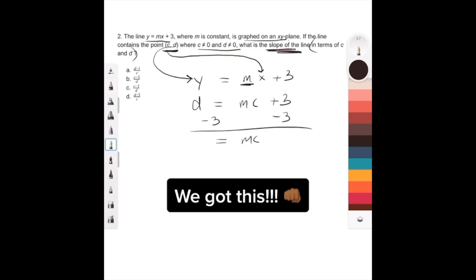Now you divide both sides by c and now you've solved for m, the slope, in terms of c and d. d minus 3 over c is answer choice d.